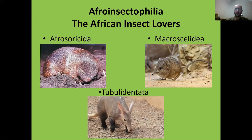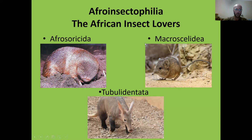The African insect lovers are broken into three different orders: the Afrosoricida, the Macroscelidea, and the Tubulidentata. You don't have to learn the big fancy words, but it's good to know them. The Afrosoricida are golden moles and their cousins; the Macroscelidea are the elephant shrews; and the Tubulidentata has only one member — the aardvark.